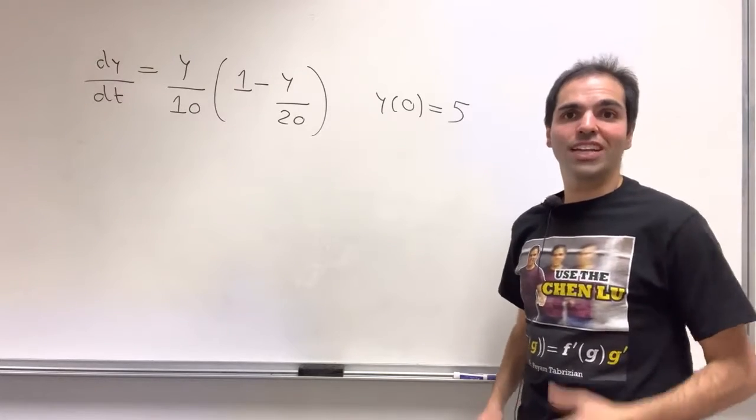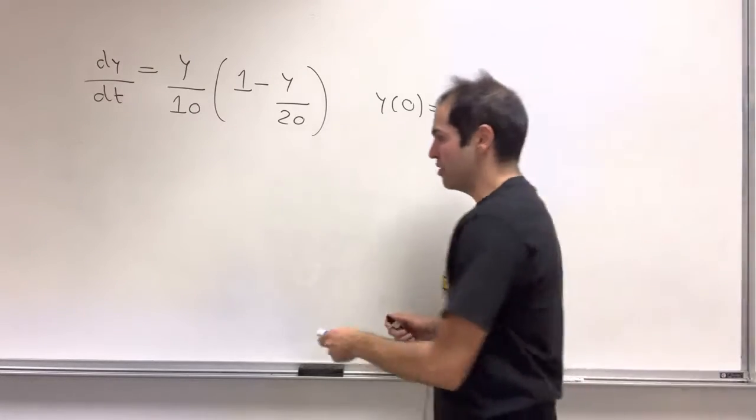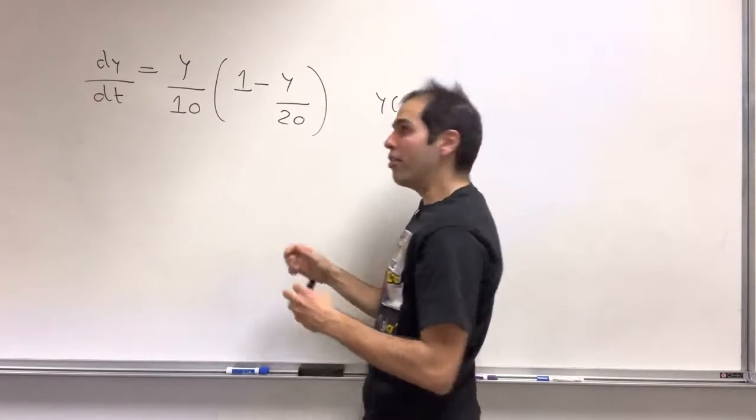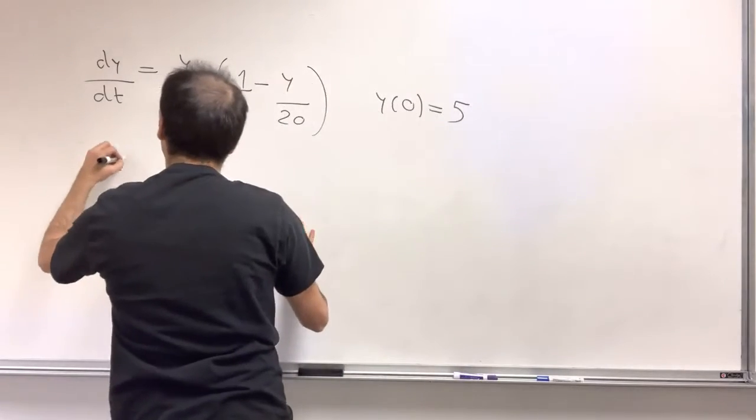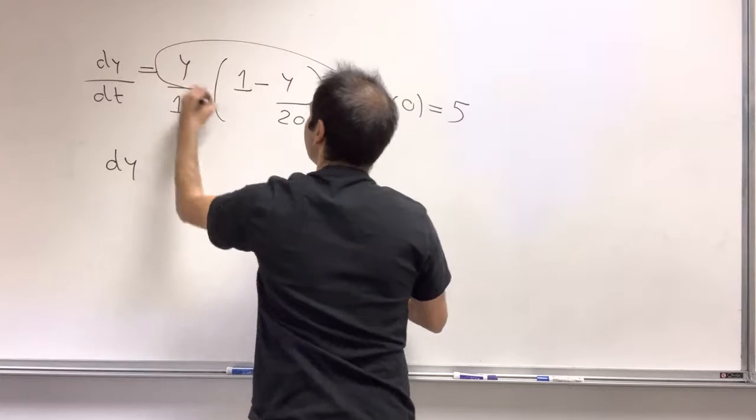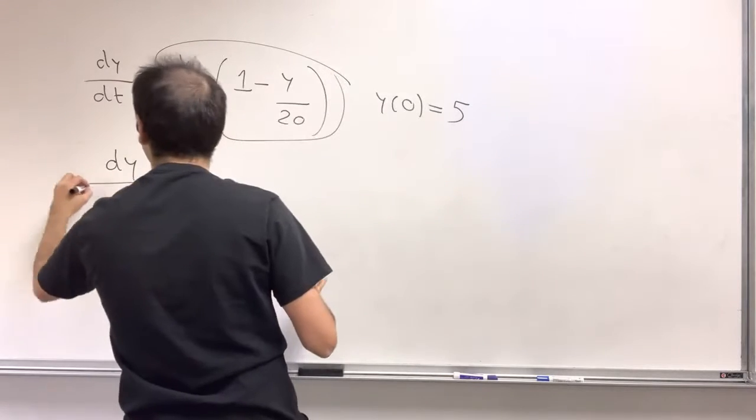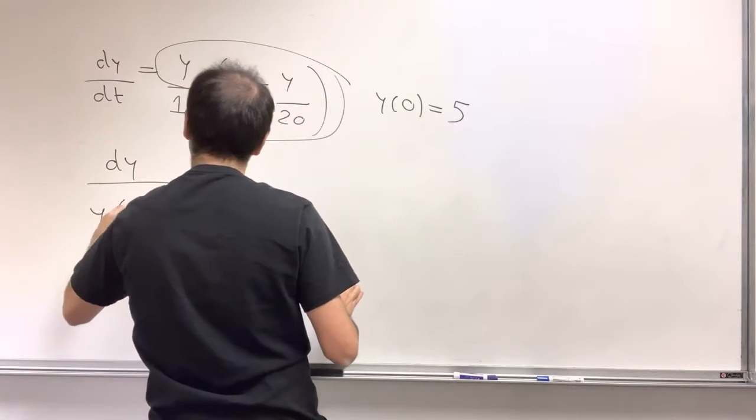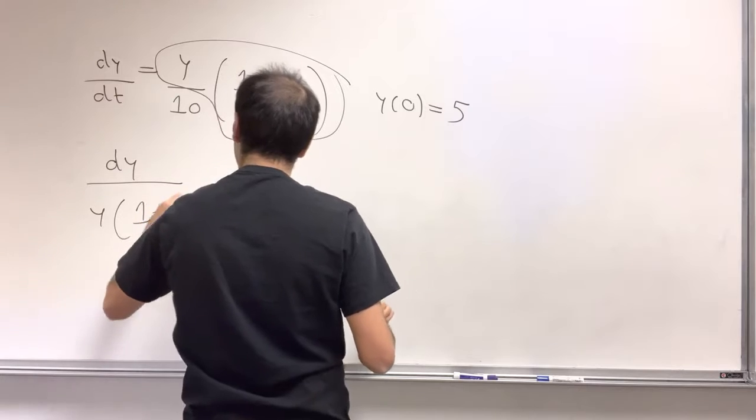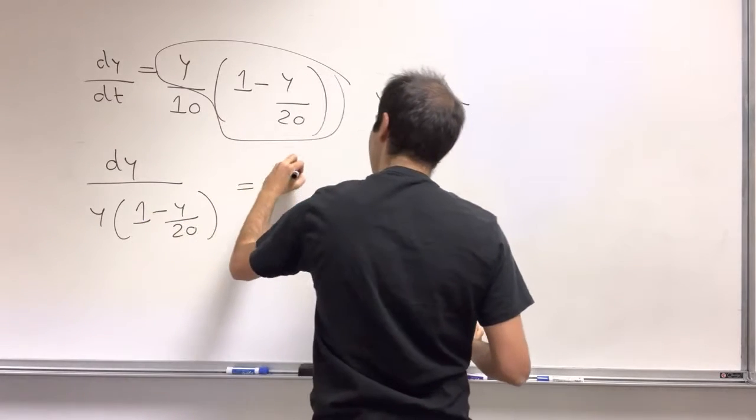Let's solve the logistic differential equation using separation of variables. So here we want to put all the y's on the left hand side, so let's divide by this quantity and we get dy over y times 1 minus y over 20 equals dt.